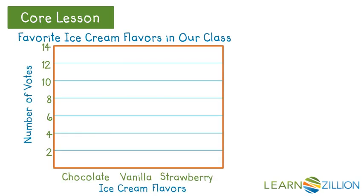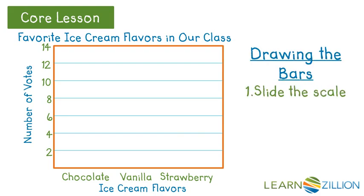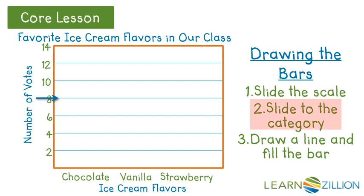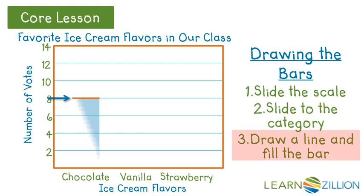To draw the bars on our bar graph, first you slide the scale up on the y axis — the vertical axis that goes up and down. Then you slide to the category and draw a line and fill in the bar. Chocolate was eight, so we slide up to eight, slide over to chocolate, draw a line, and fill in the bar.